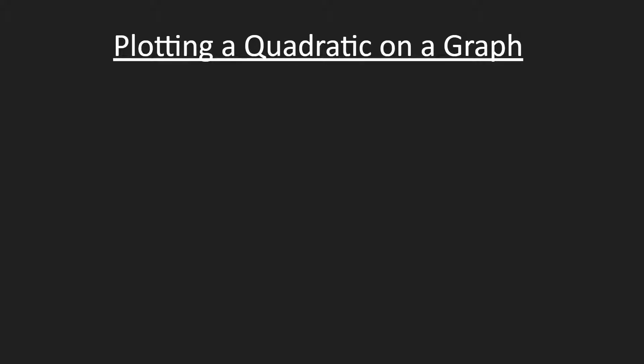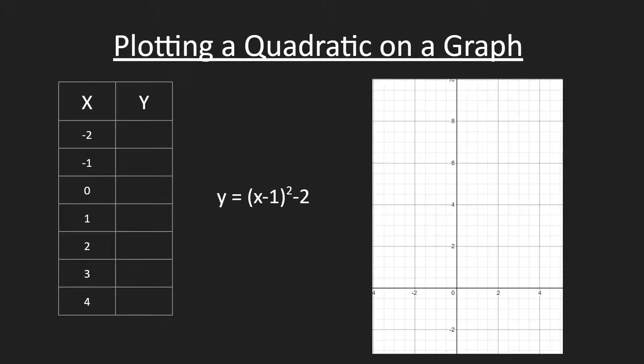Let's try to plot a quadratic on a graph. We're given a table of values from x equals negative 2, negative 1, 0, 1, 2, 3, 4. We're going to be talking about the equation y equals x minus 1 all squared minus 2, and here's a graph for reference.